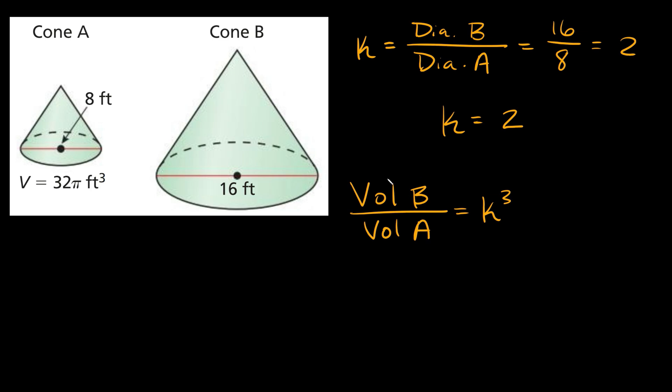As you can see, I put the volume of cone B on top and A on the bottom. The reason I did that is because you need to keep it consistent with how you found your scale factor k. So since we put B on top and A on the bottom, you want to keep B on top and A on the bottom. And then the other thing is just setting this comparison between the volumes equal to k cubed.